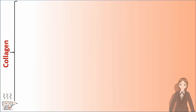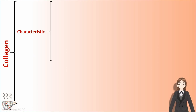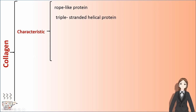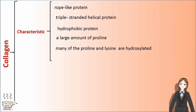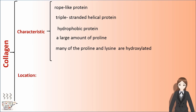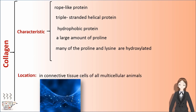Collagen is a rope-like, triple-stranded helix and hydrophobic protein. It has a large amount of proline, and many of the proline and lysine residues are hydroxylated. It is located in connective tissue cells of all multicellular animals.